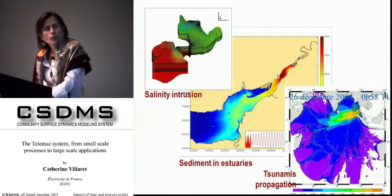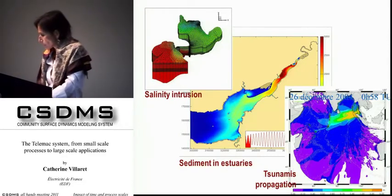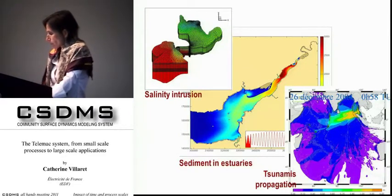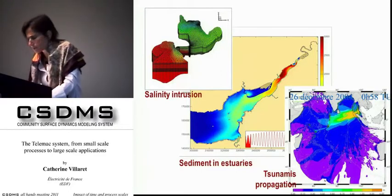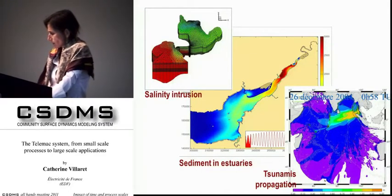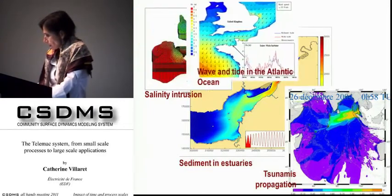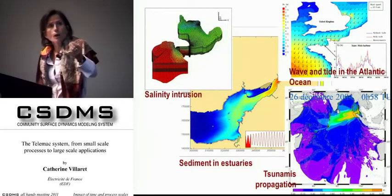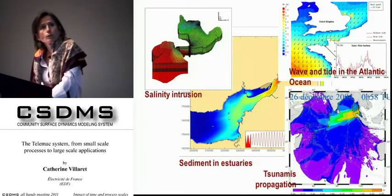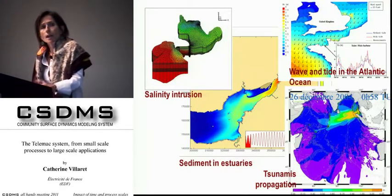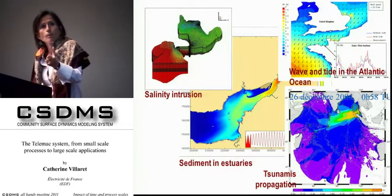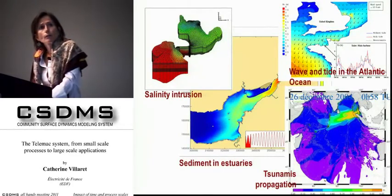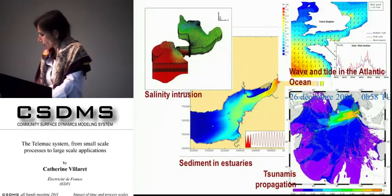A nice example is also the propagation of tsunamis. We reproduced the 26 December event — it was in Sri Lanka. We can also have applications in the ocean — this is a wave and tidal combined coupling for the Atlantic Ocean model.